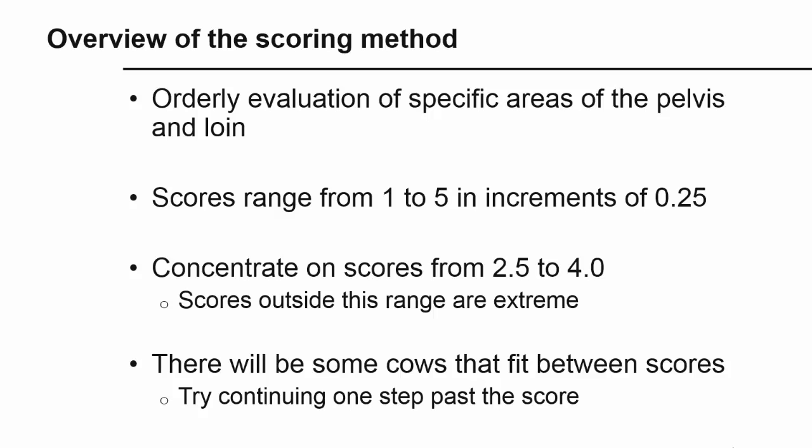This system will teach you to evaluate specific areas of the pelvis and loin in an orderly fashion. Scores range from 1 to 5 in increments of 0.25. The amount of body fat increases as you move up the scale from 1 to 5.